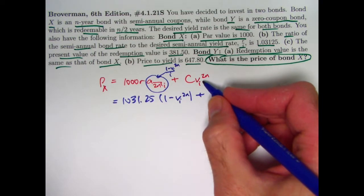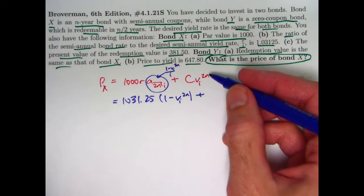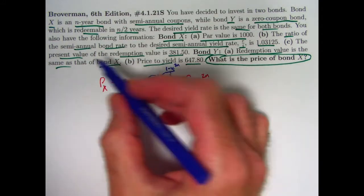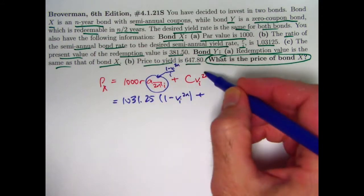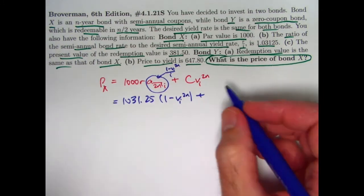With this term, we don't need to do anything fancy there. That again is the present value of the redemption value for bond X. This thing right here is 381.5.